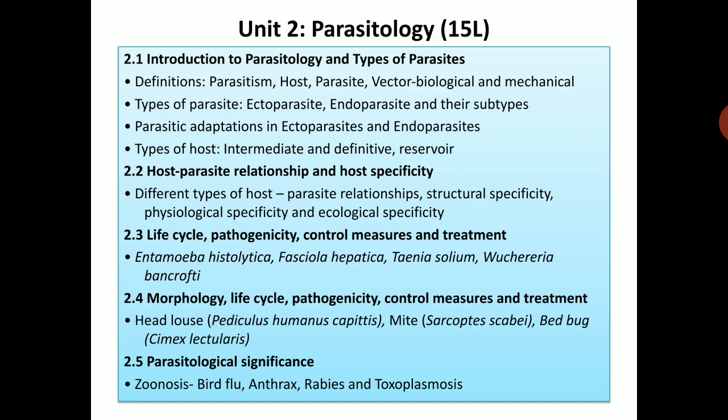These parasites live on or in the body of a host. Those on the body of the host are ectoparasites; those in the body are endoparasites. So we are going to learn about these parasitic relationships between animals — host, parasite, vector, biological and mechanical types of parasite like ectoparasites and endoparasites and their subtypes, parasitic adaptations in ecto- and endoparasites, types of host such as intermediate, definitive and reservoir. In the second topic, you are going to learn about the host-parasite relationship and host specificity, structural specificity, physiological specificity and ecological specificity of the parasite.